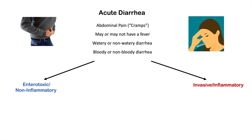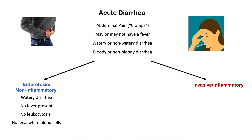Now that we know the pathogenic mechanisms, it becomes easy to remember the associated symptoms. With enterotoxic non-inflammatory causes, we see watery diarrhea due to malabsorption of nutrients or efflux of ions into the GI lumen, drawing water out and causing watery diarrhea. There's often no fever, since it is usually toxin-mediated with no invasion of microorganisms into GI cells, no tissue infection, and therefore no inflammation. We also don't see leukocytosis or fecal white blood cells.